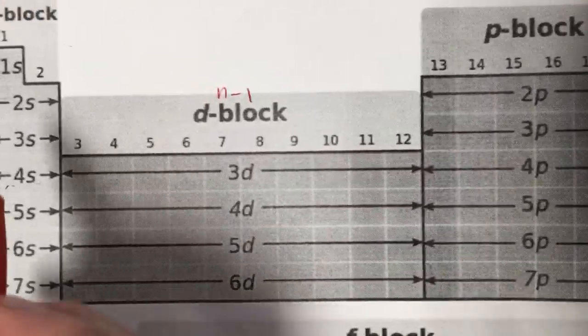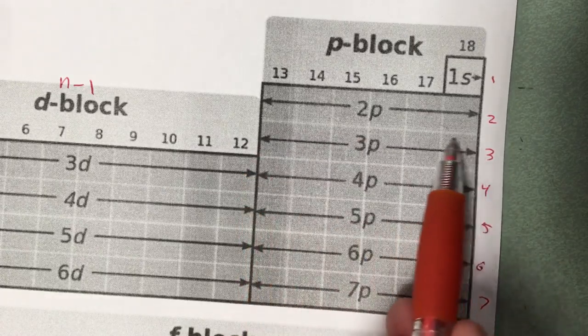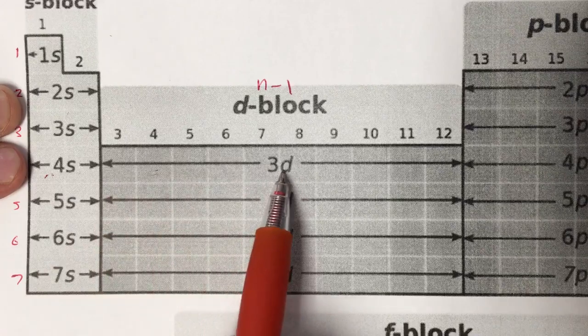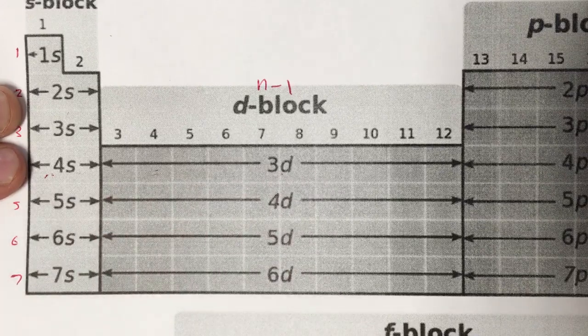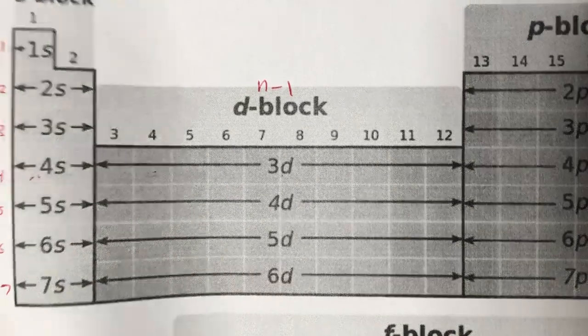The P block is the next one — those are electrons going into the P orbitals, and again it's still just related to the period number. This row is 2P because we are in the P block and we are on period 2. The S block and the P block correspond to the actual period number you're on.